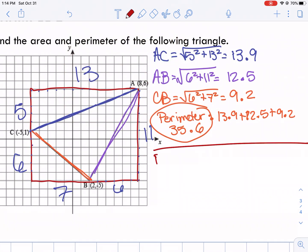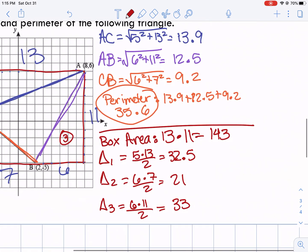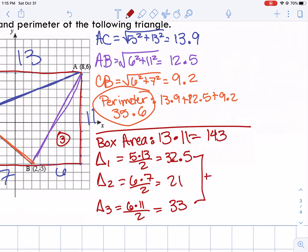Then to find the area, first we find the box area. So remember for a box, you do the entire base, which in our case is 13, times the entire height, which is 11. So 13 times 11 is 143. Triangle 1, we're going to find its area is 5 times 13 divided by 2, which is 32.5. Triangle 2 is 6 times 7 divided by 2, which is 21. And then triangle 3 is 6 times 11 divided by 2, which is 33. So our last two steps to find the area is we add all of the triangle areas up, which is 86.5. So then finally the area of the triangle is 143 minus 86.5, which is 56.5.